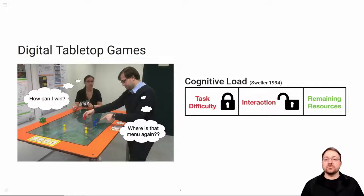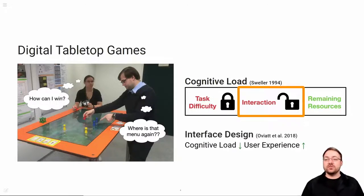Experiencing high levels of cognitive load is bad. It induces stress, causes human error, and limits our ability to perform a task successfully. Thus the goal is to keep cognitive load as low as possible. Since task difficulty cannot be changed, we have to optimize the interface. And indeed, previous research has shown that decreasing cognitive load results in a better user experience.